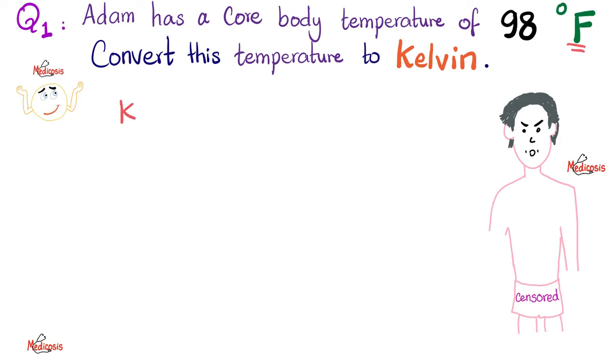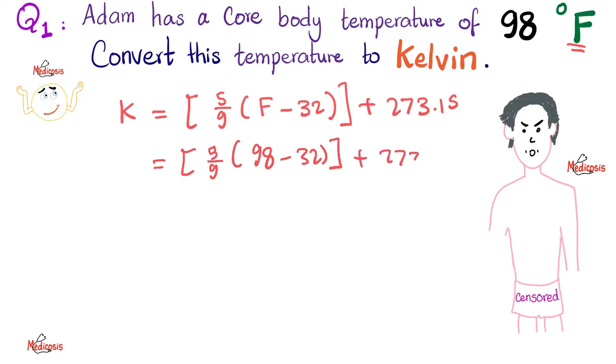Well, we have the temperature in Fahrenheit when I convert it to Kelvin. So the temperature in Kelvin equals 5 over 9, open parentheses Fahrenheit degrees minus 32, close parentheses, close the bigger parentheses plus 273.15. The temperature in Fahrenheit is 98. So it's 5 over 9 multiplied by 98 minus 32, close and close plus 273.15. When you do the math, you'll find the temperature of 309.8 degrees Kelvin.